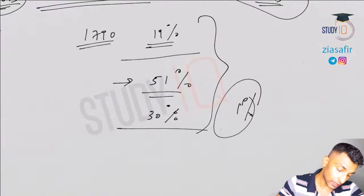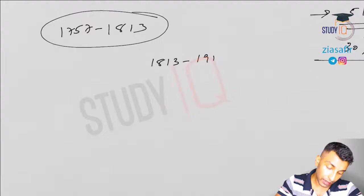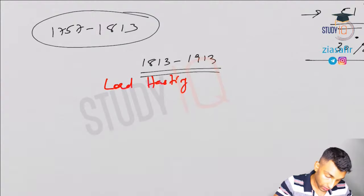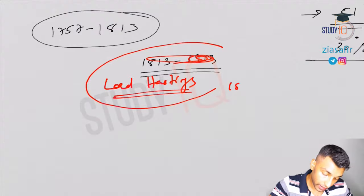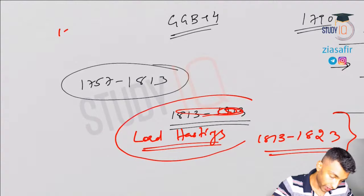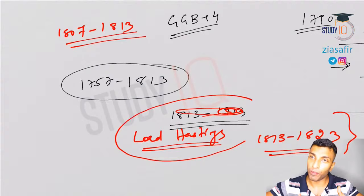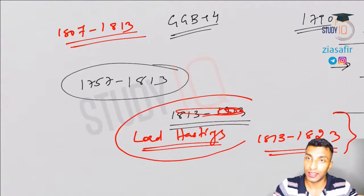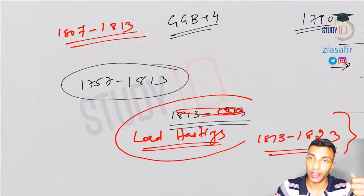So let's discuss this period now — 1813 to 1823. The Governor General during this time is Lord Hastings. During 1807 to 1813 we have Lord Minto One; another Minto comes exactly 100 years later around 1909, during the Morley-Minto Reforms. That's how history repeats — 1757 Battle of Plassey, 1857 revolt, 1947 freedom.